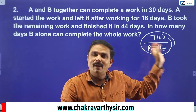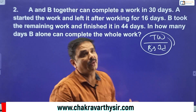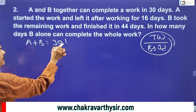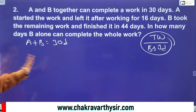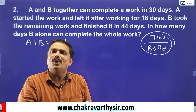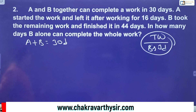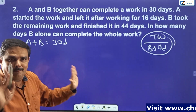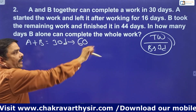Here only one variable is given — A and B together in 30 days. No need for least common multiple; simply take any multiple of 30. For best convenience, I'm taking 60 — the next multiple of 30 — as the total work, imagining 60 units of work as total. Now A and B can do 60 units in 30 days, meaning they do 2 units of work per day. A plus B's per day work is 2 units.